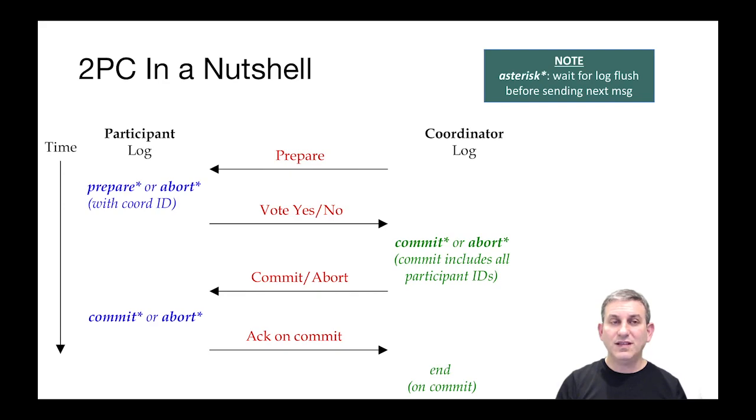So in a nutshell, this is the two-phase commit protocol. Time is going from top to bottom in this slide. The coordinator is on the right, the participant is on the left, and the messages are on the arrows, and you can see it's a two-round protocol, two-phase protocol. Each round has a message in each direction, and you can also see the log records that are being generated, and these log records have asterisks on them if they have to wait for the log flush before sending the next message.